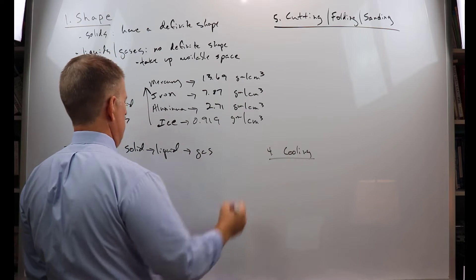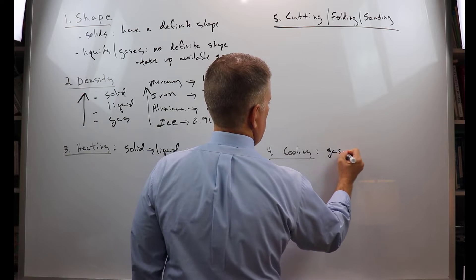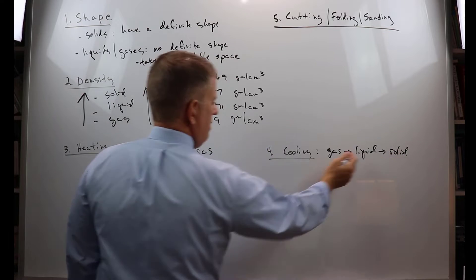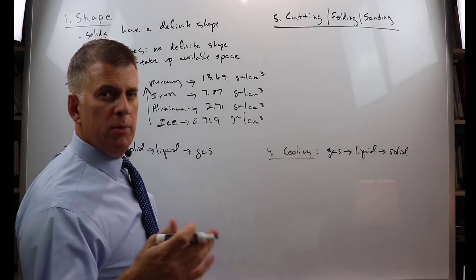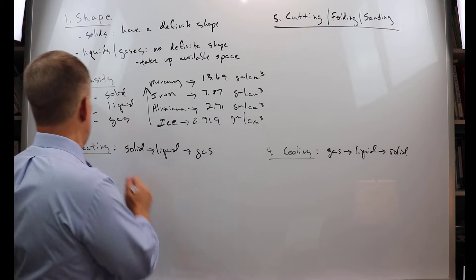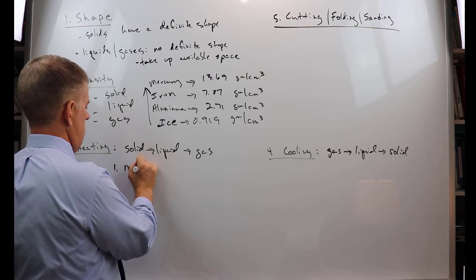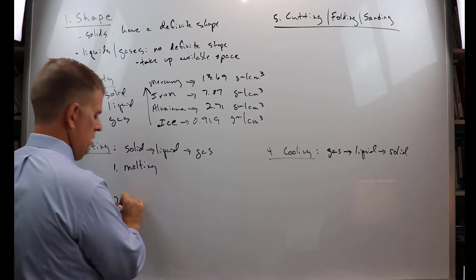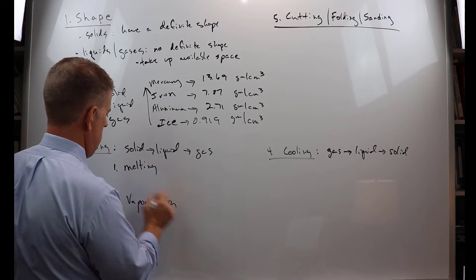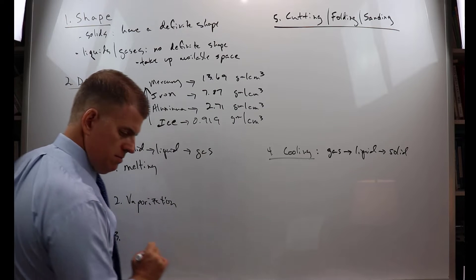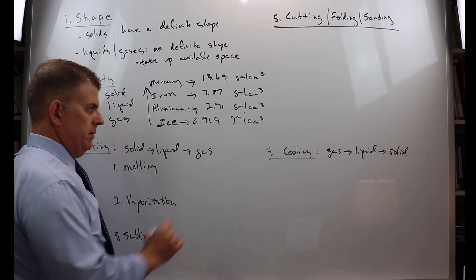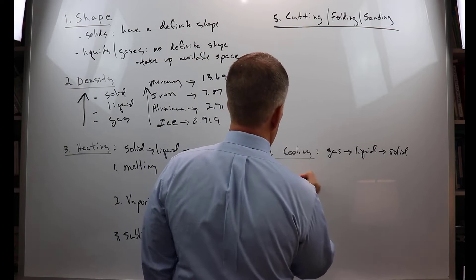There are three processes that you might need to know for each of these. Three processes: first one here for heating is melting, second one is vaporization, and the third one is sublimation. I'll explain what these things are in a moment. For cooling, three processes: number one, condensation; two, freezing; and deposition.